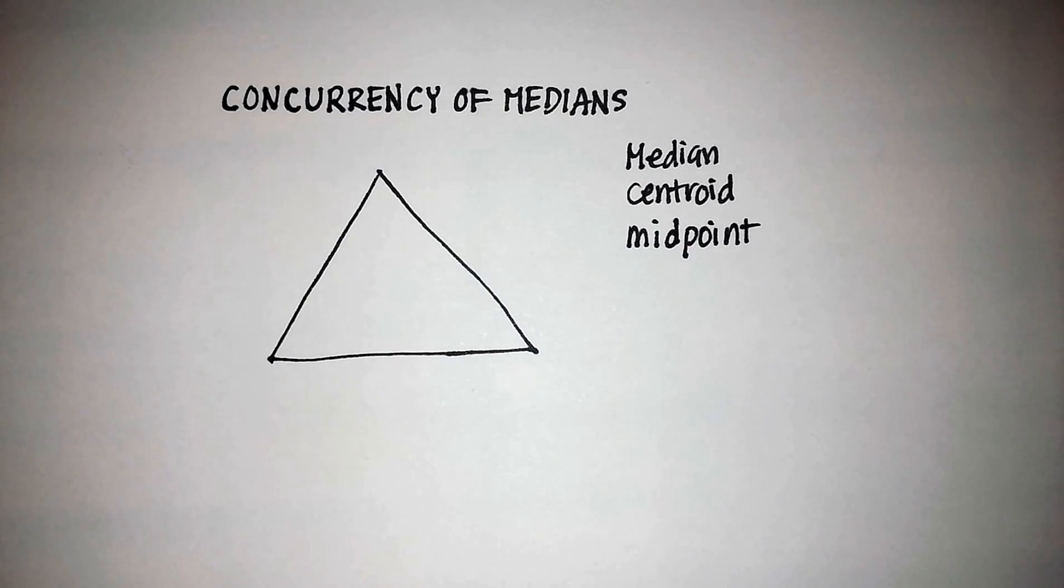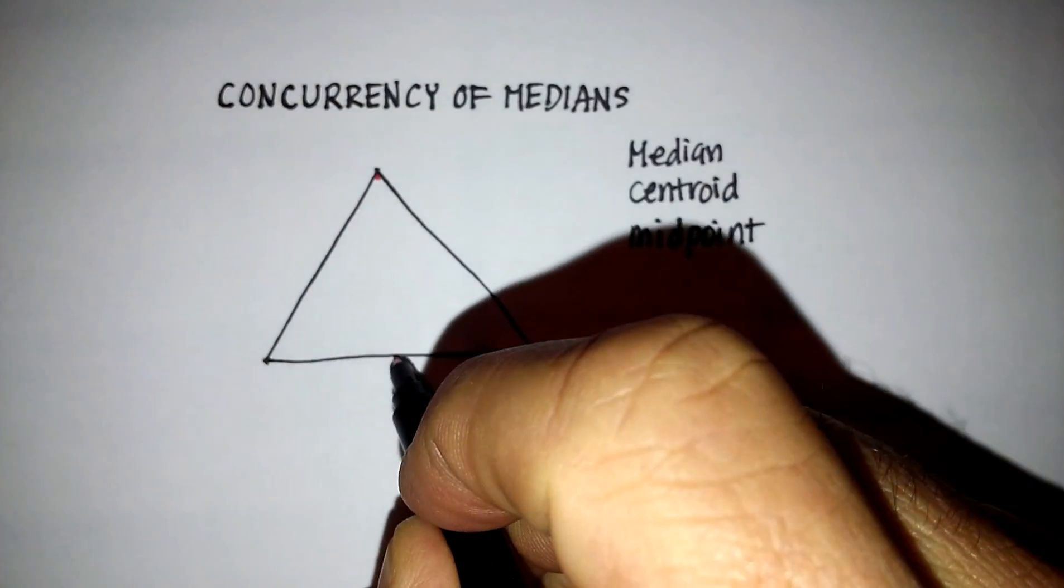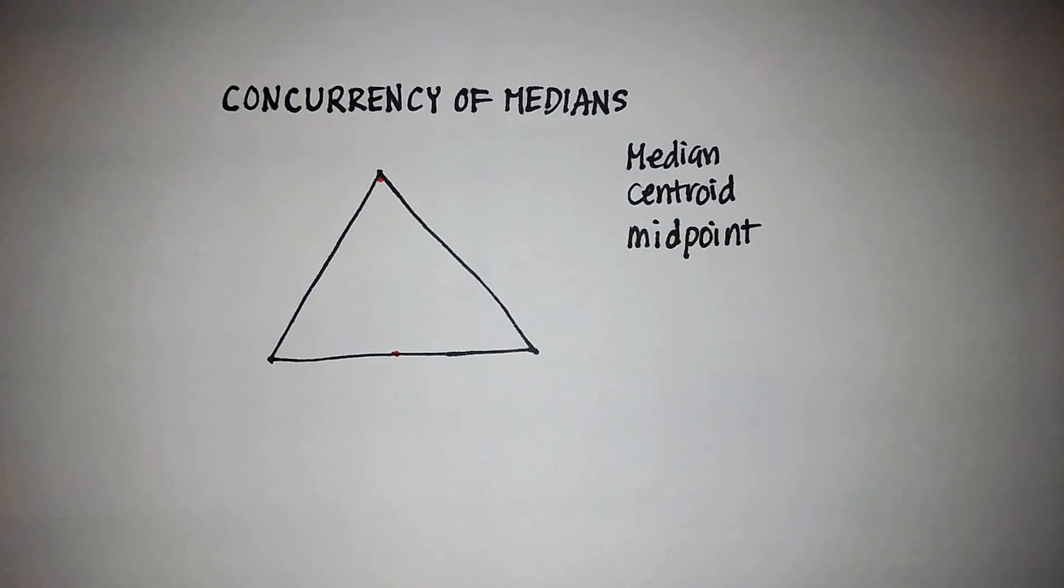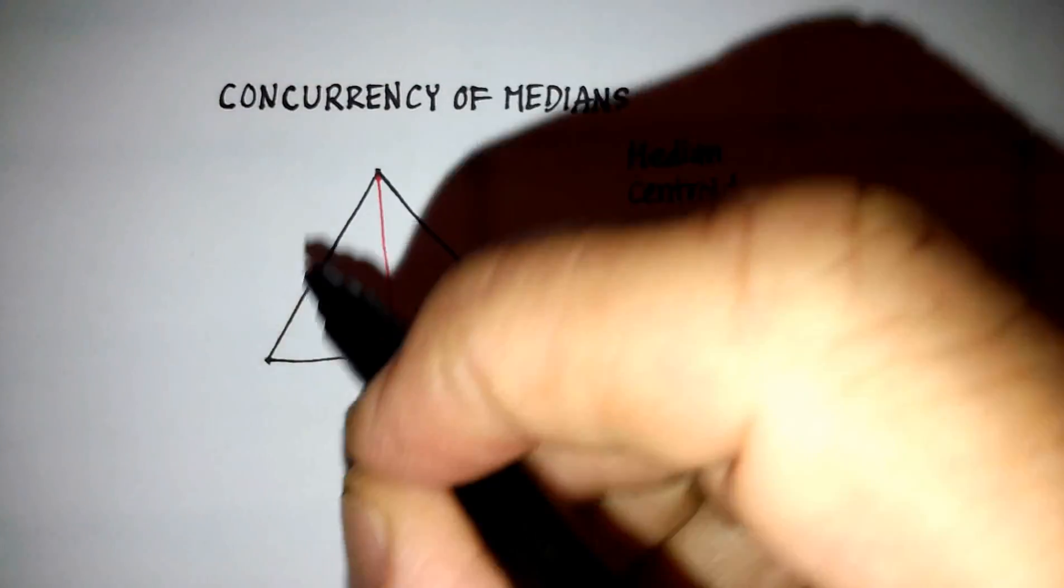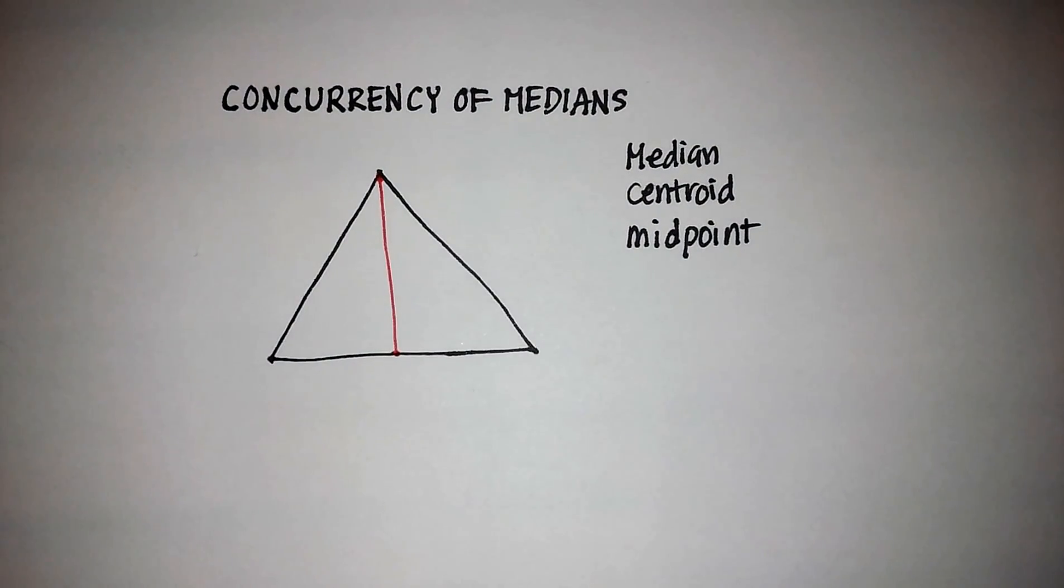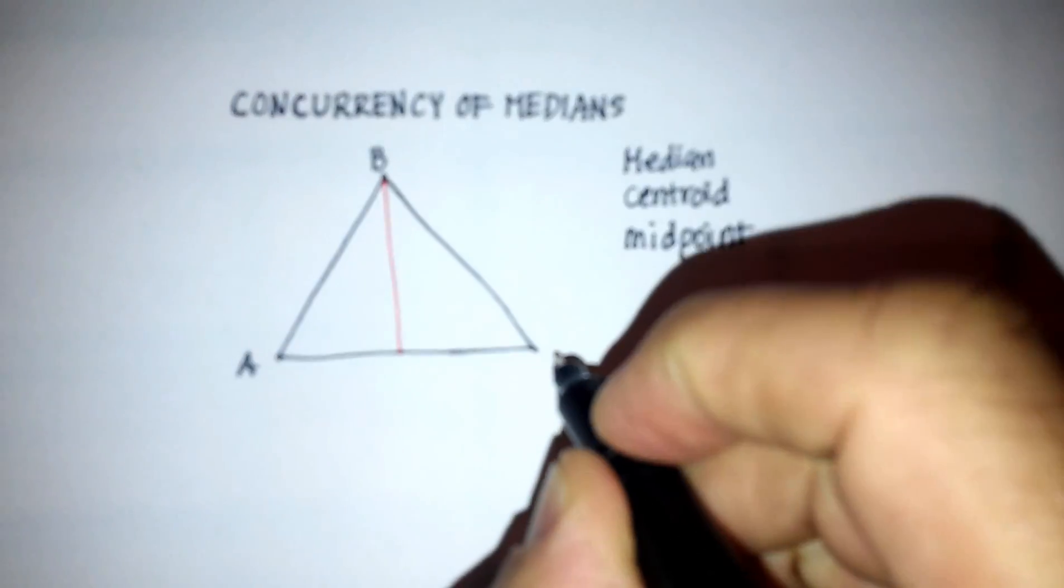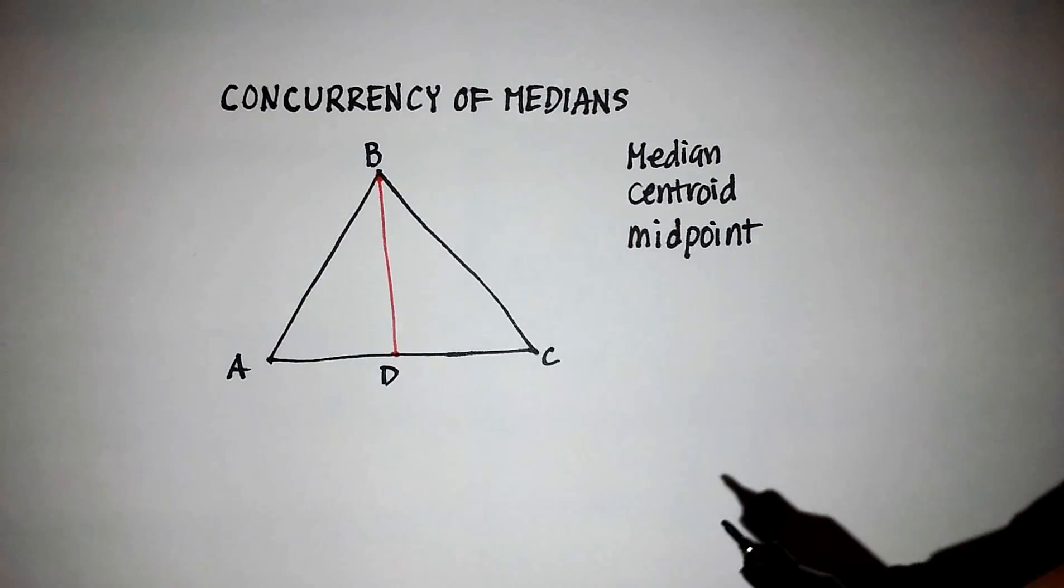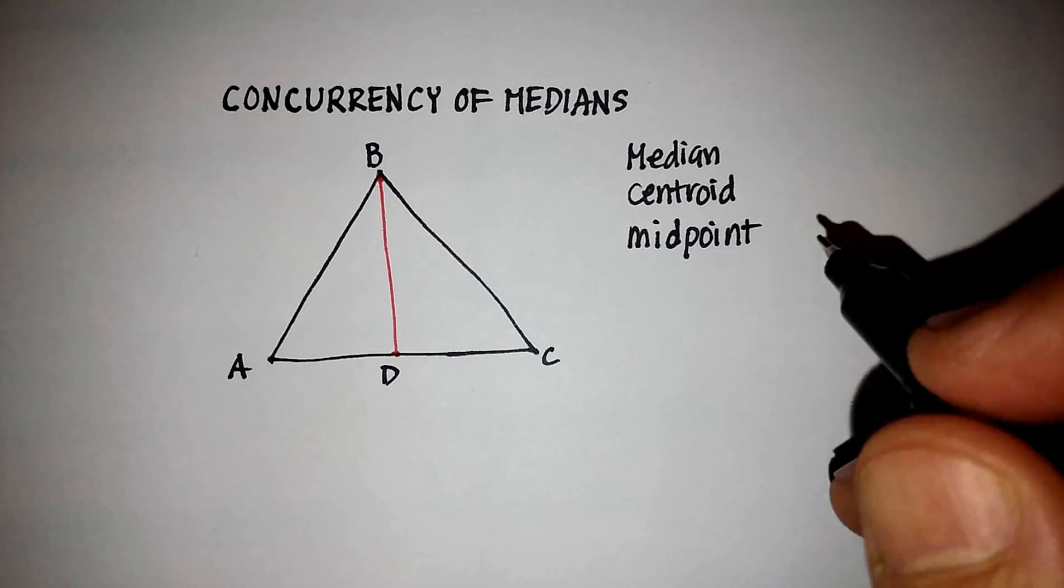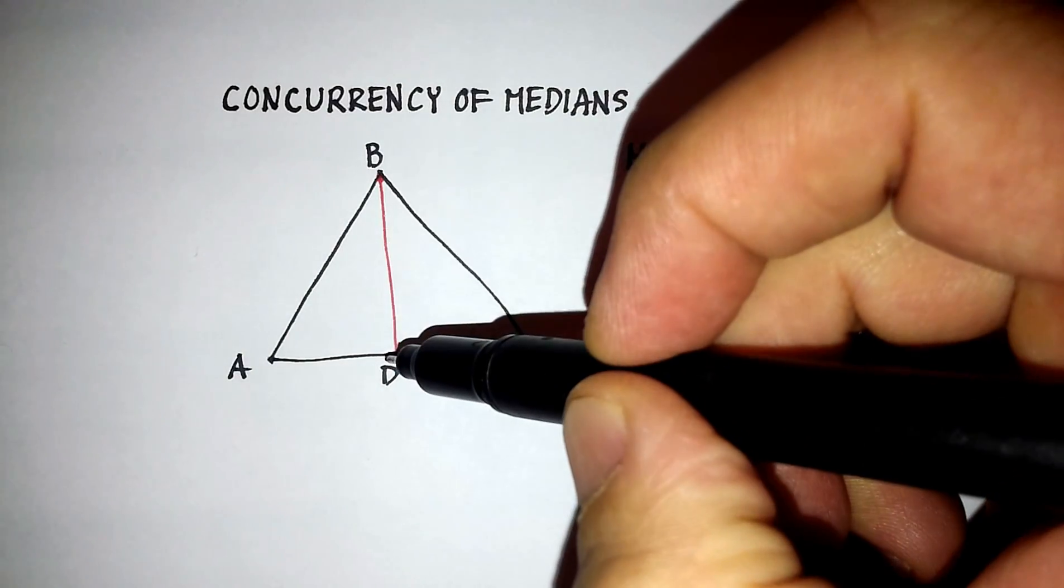So the median of a triangle is basically the line that goes from one of the vertices to the midpoint of the opposite side. So actually let me just put some labels here that might make this a little bit easier to describe. We'll call this A, B, we'll call that C, and we'll call this one D. So the median of this particular triangle is line segment BD.